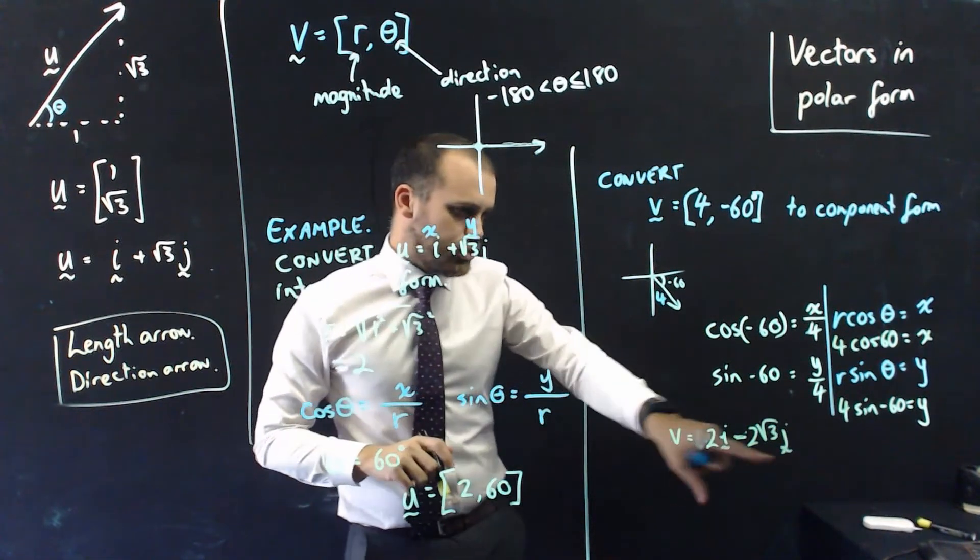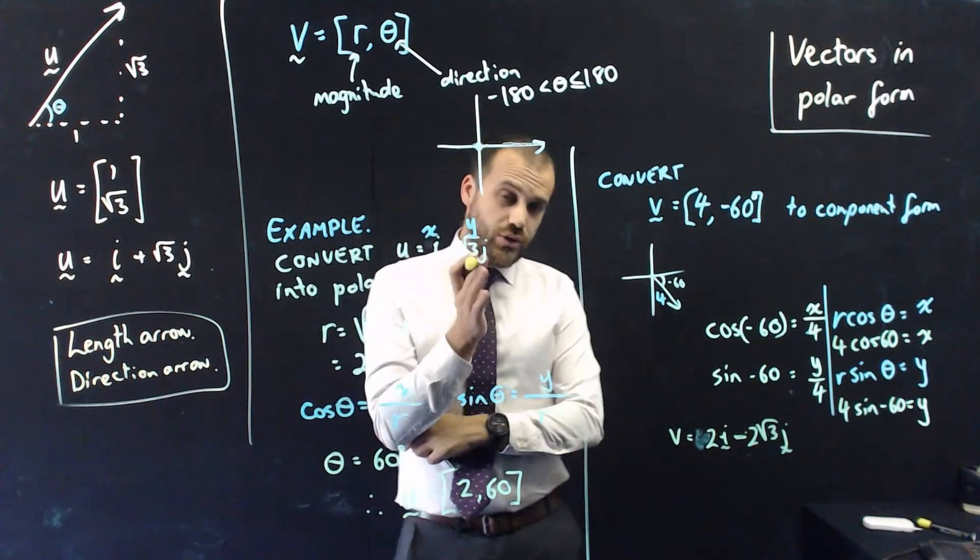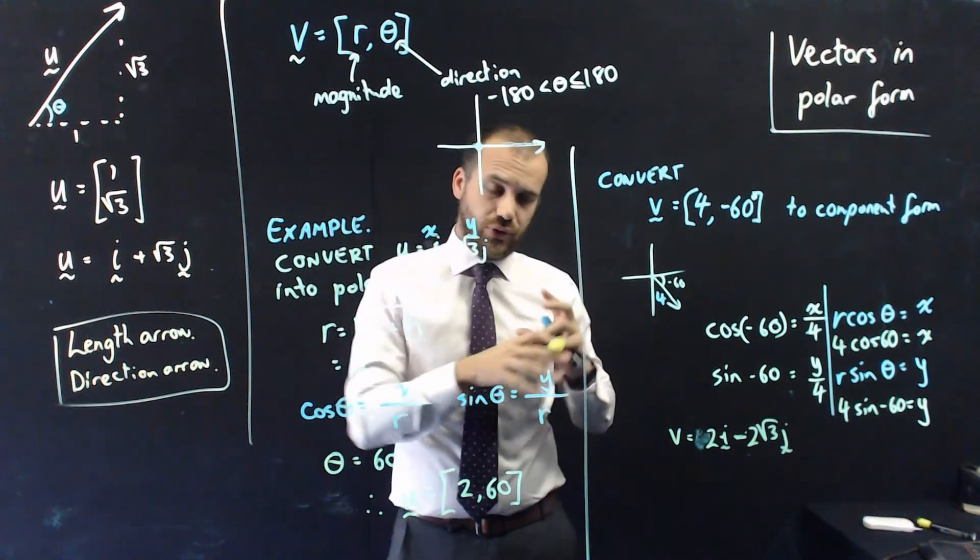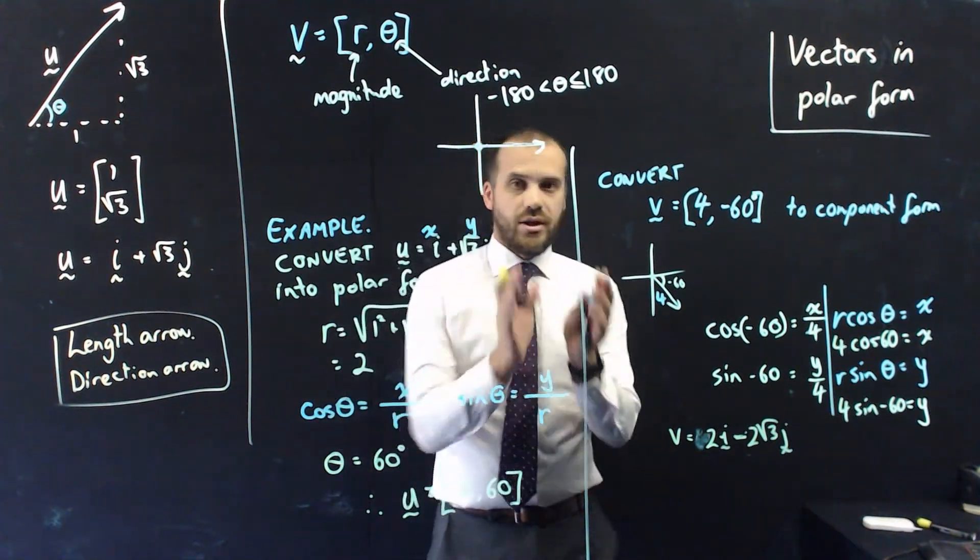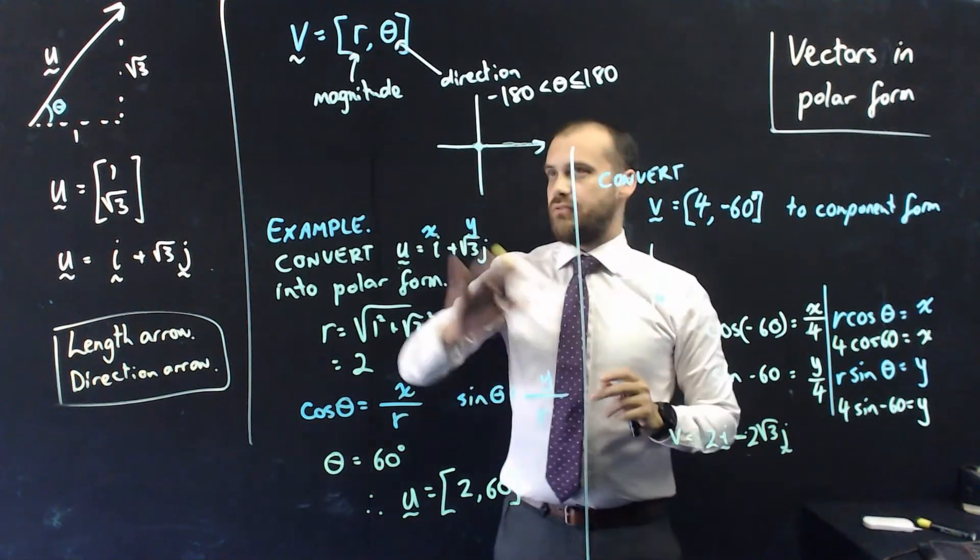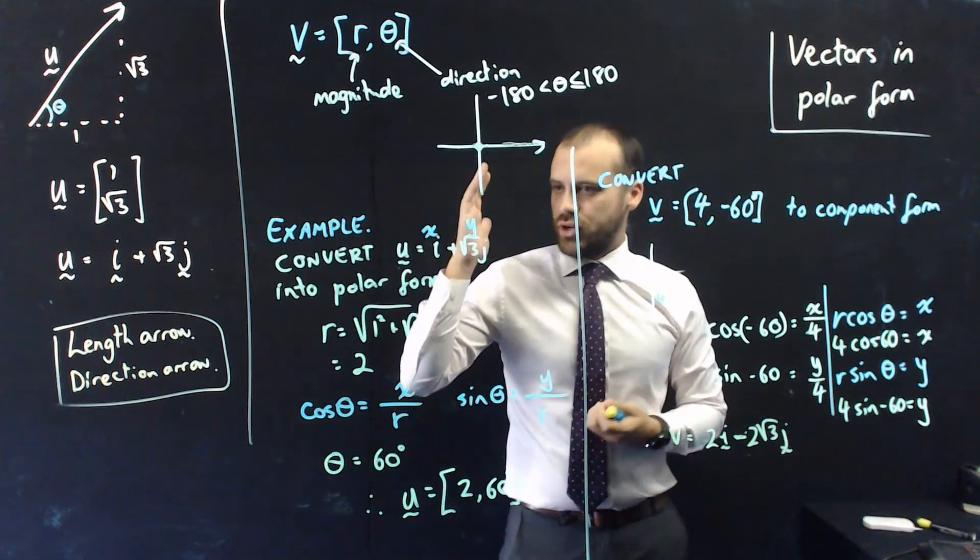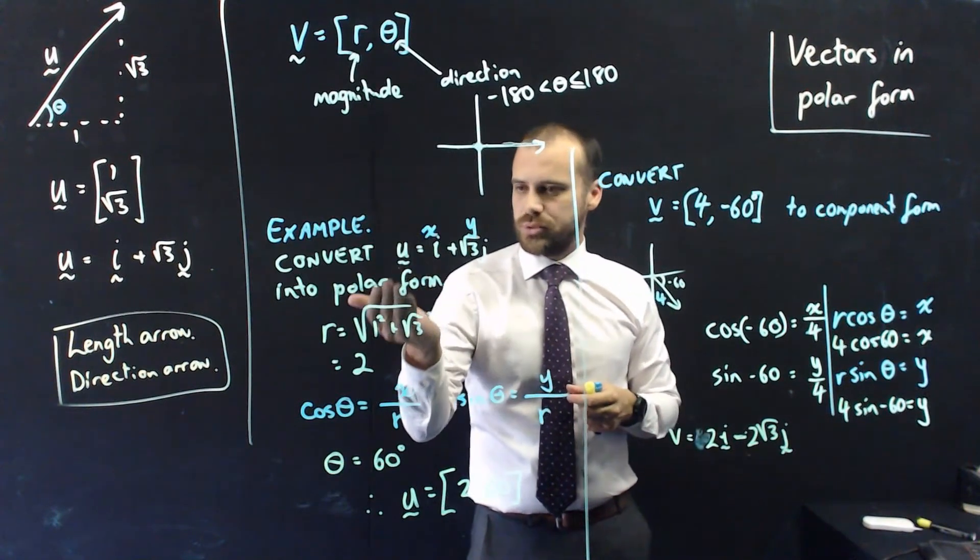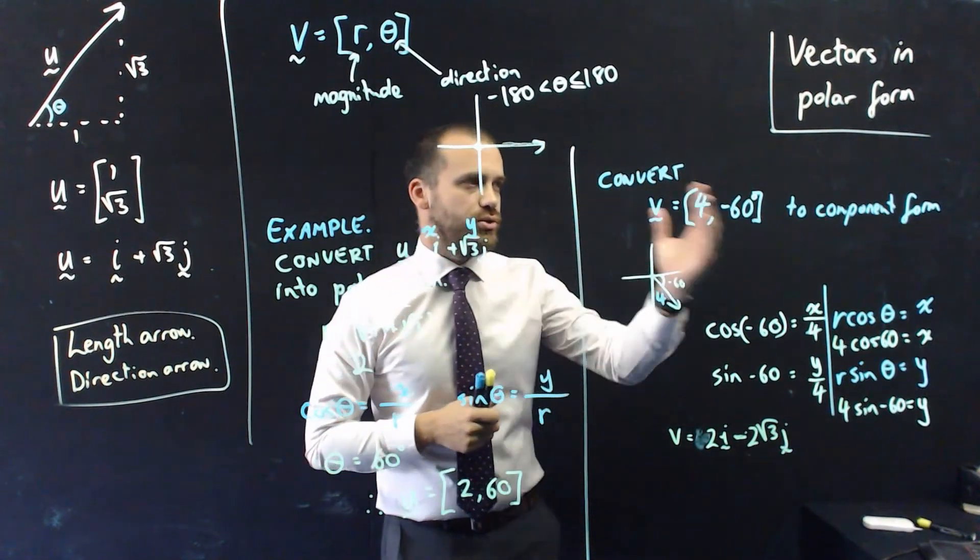Now, you should be able to do both of those things using what you know about standard triangles and the unit circle. You've already learnt all of that stuff in the past. OK, that all of that is vectors in polar form, converting from component form to polar form and from polar form to component form.